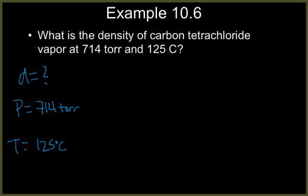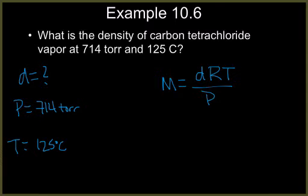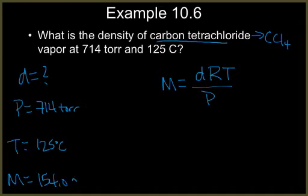If I look at my formula here, molar mass equals density RT over P. Molar mass, if I know what the substance is, so I know carbon tetrachloride is CCl4, then I can solve for my molar mass by just adding up 1 C plus 4 Cl. My mass is 154.0 grams per mole. Now I have enough information to solve for density.